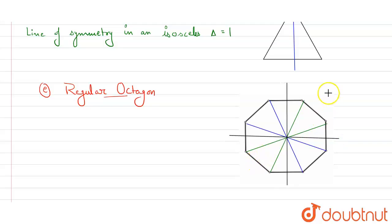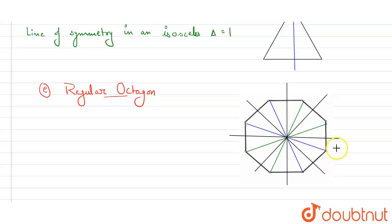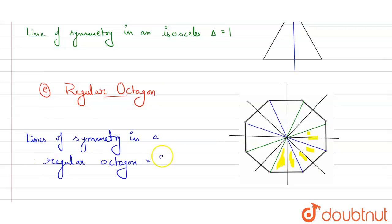Drawing lines from the center through each pair of opposite points or sides, we find the octagon is symmetric around all of them. Each triangular section of the octagon is identical to the others. In total, we can draw eight such lines, so lines of symmetry in a regular octagon equals eight.